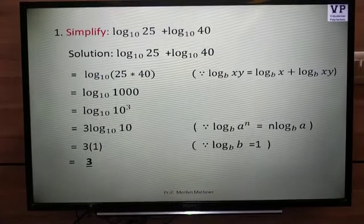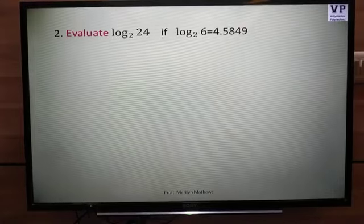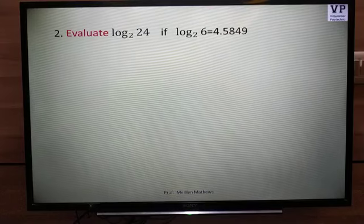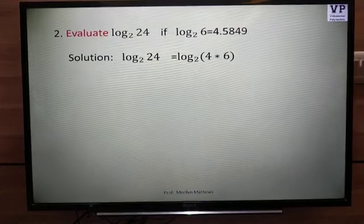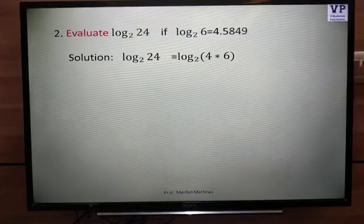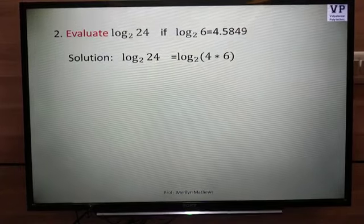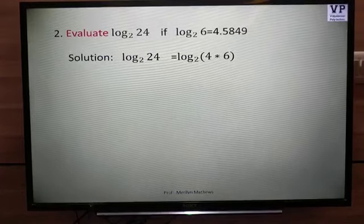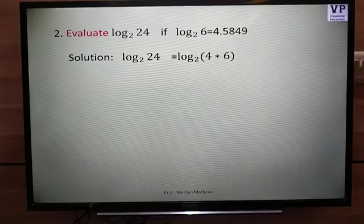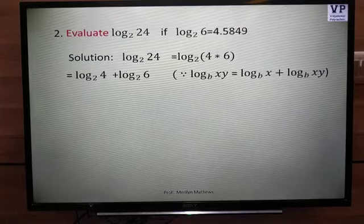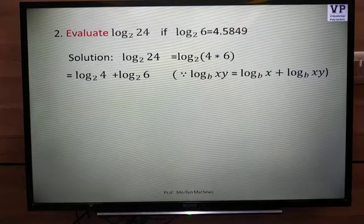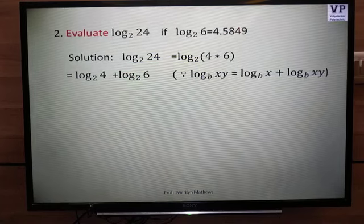Let us apply some of the same rules to the next problem. Evaluate log 24 base 2 if you are given the value of log 6 to the base 2. Now the trick lies in writing 24 as some multiple of 6. So it can be written exactly as 4 multiplied by 6. As you see the multiplication, we have to use the logarithmic addition identity. Hence it goes as log 4 base 2 plus log 6 base 2.